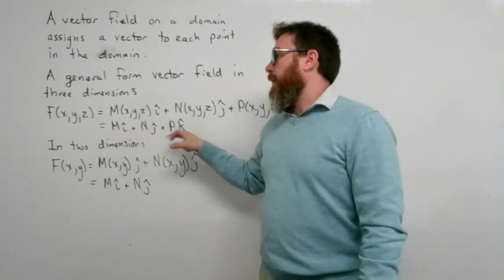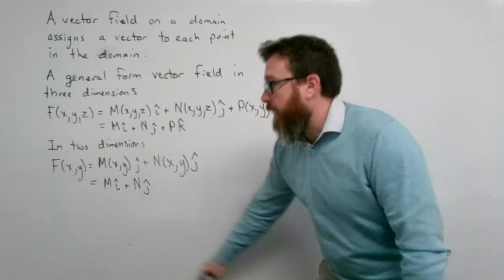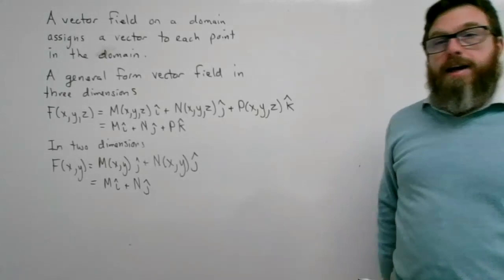In two dimensions, F of x, y is just Mi + Nj, where M and N are functions defined on the x-y plane.